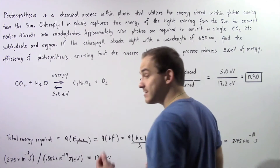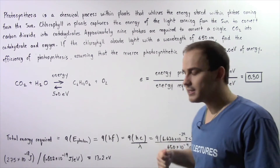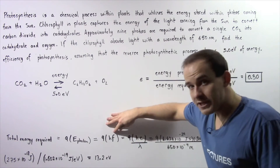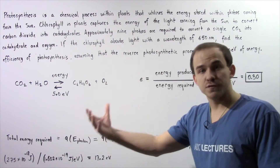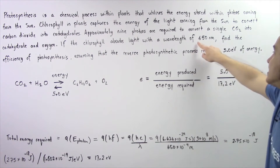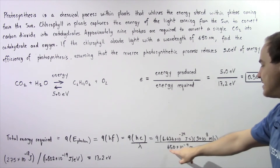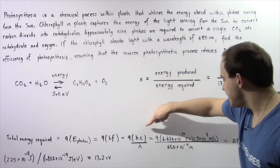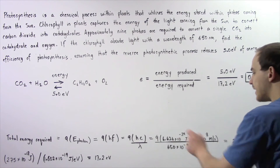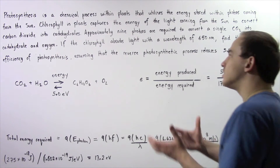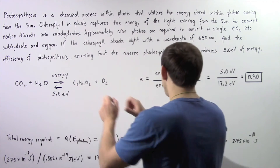The energy in a single photon is equal to h, Planck's constant, multiplied by the frequency of the light. Frequency equals c, the speed of light, divided by the wavelength. The wavelength is 650 nanometers, which is 650 × 10⁻⁹ meters. So 9 multiplied by Planck's constant multiplied by the speed of light divided by the wavelength gives us the energy required by the chlorophyll to transform the reactants into the products.